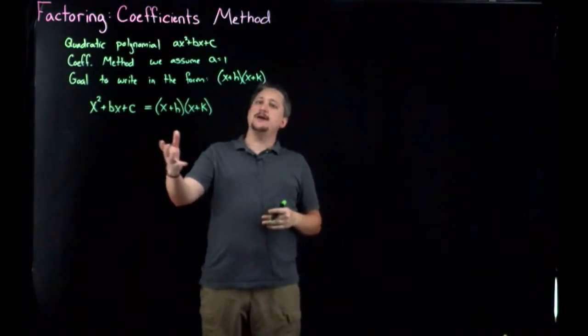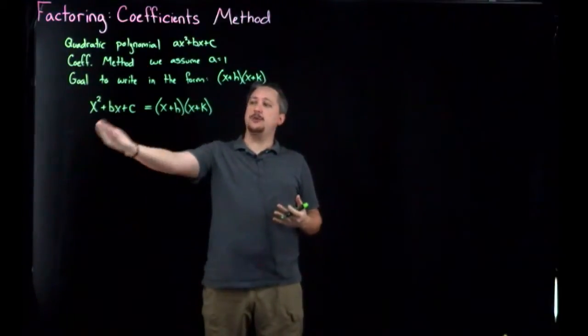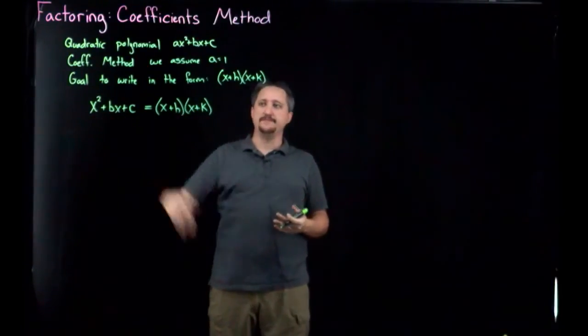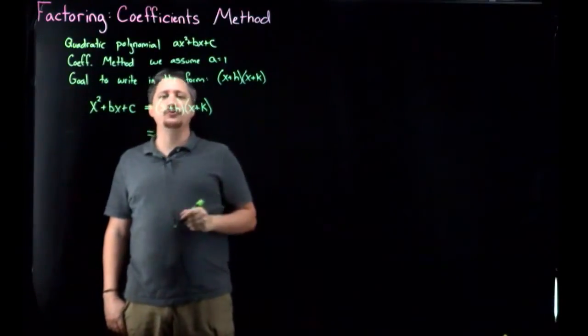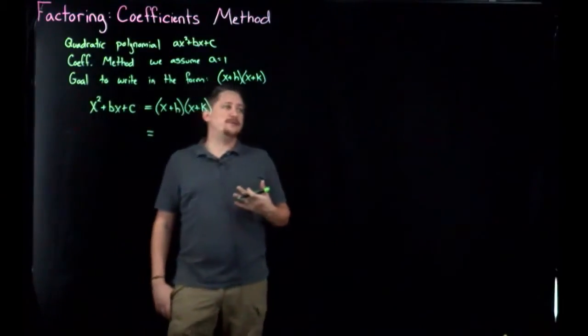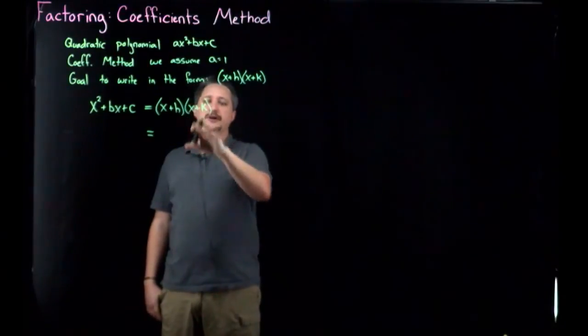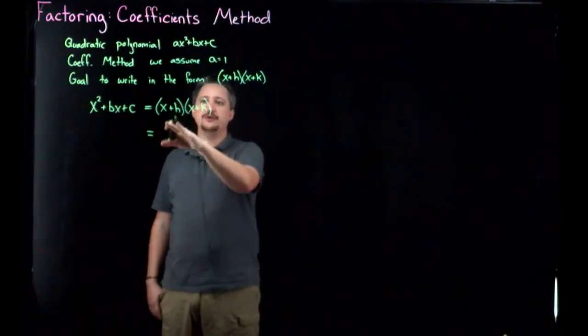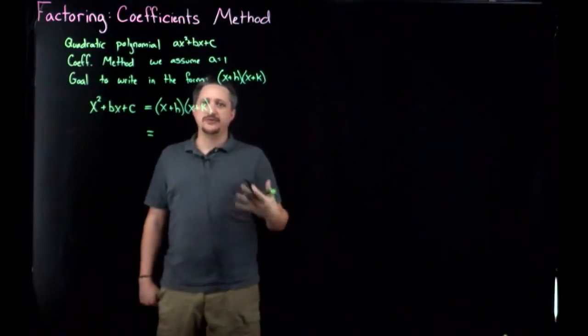To figure out how we're going to do that, we're basically going to reverse engineer this. So we're going to expand this out and look at how it compares to this version. So if I expand this out, this will be an opportunity to show the distribution. So you're probably used to doing this with FOIL. But FOIL only works if you have exactly this kind of setup, a binomial times a binomial.